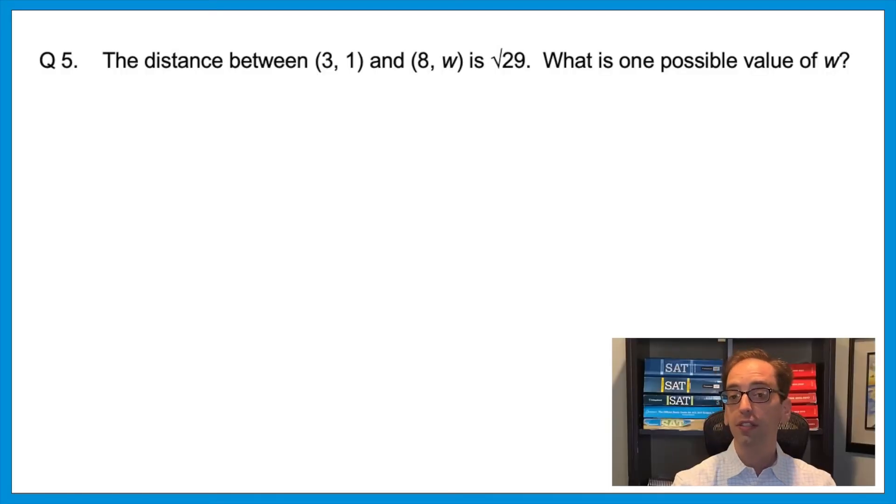Question 5. The distance between 3,1 and 8,w is radical 29. What is one possible value of w? I'll give you a hand with the distance formula just because we need it for this question. So the distance between two points would be all under the square root x minus x squared plus y minus y squared. Press pause. Give it a shot.